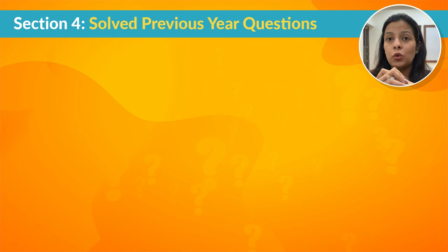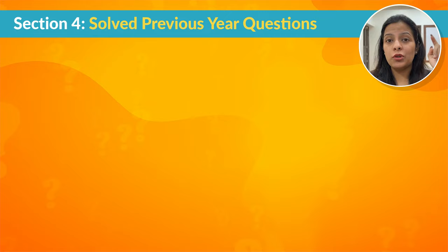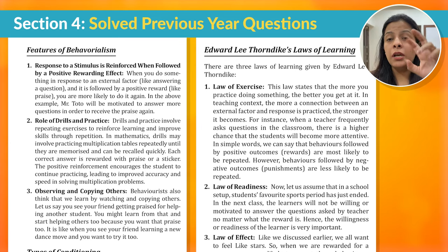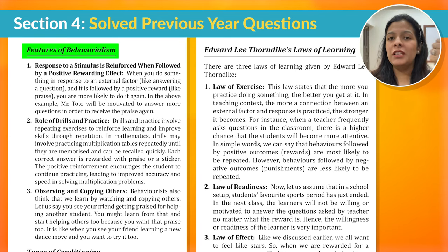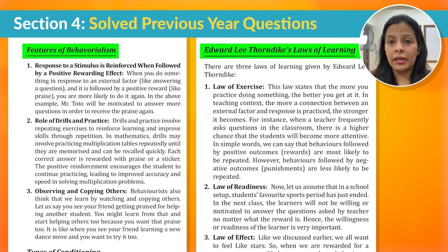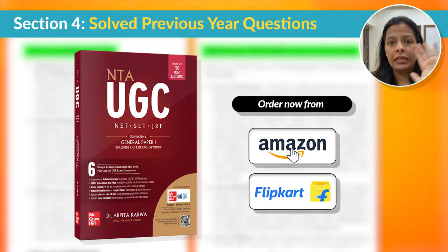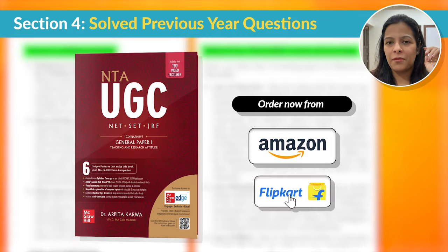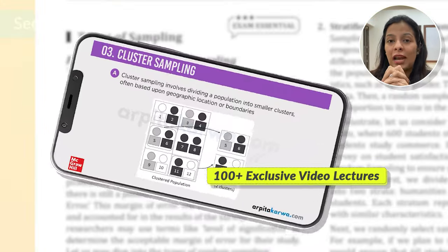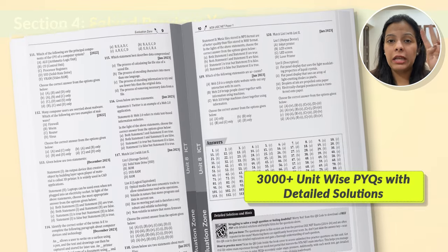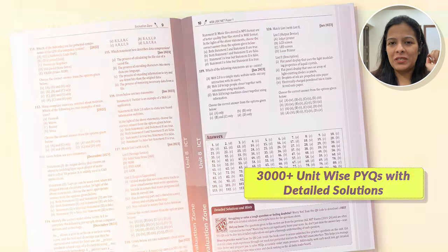Now that we've looked at key terms associated with Behavioral Development Theory as well as two important types of conditioning, it's time to look at some PYQs. But before that, let me tell you that there are two more important topics related to behavioral development theory — namely, features of behavioralism and Edward Lee Thorndike's laws of learning. These are very important because a lot of exam questions are generally asked from them. You can find these topics explained in detail in our Amazon bestseller UGC Net Paper 1 book, which comes with 100 plus video lectures and 3000 plus unit-wise solved PYQs.